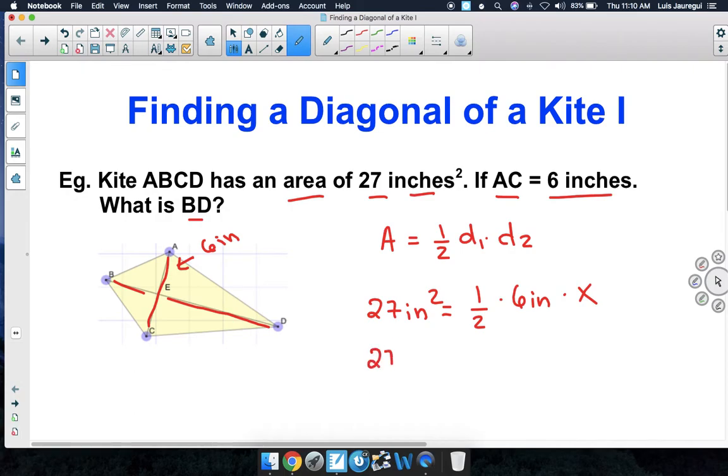Now, notice that the equation becomes 27 square inches is equal to half of 6 inches, which is 3 inches, times X.